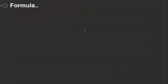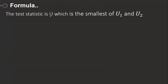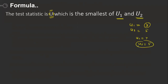The formula for this test is simple. There are two formulas and we take only one for the calculation. The test statistic is denoted by U, which is the smallest of U1 and U2. For example, if U1 equals 3 and U2 equals 5, then U equals 3. If U1 equals 7 and U2 equals 5, we take U equals 5. We find U1 and U2 and take the minimum as our calculated U value.